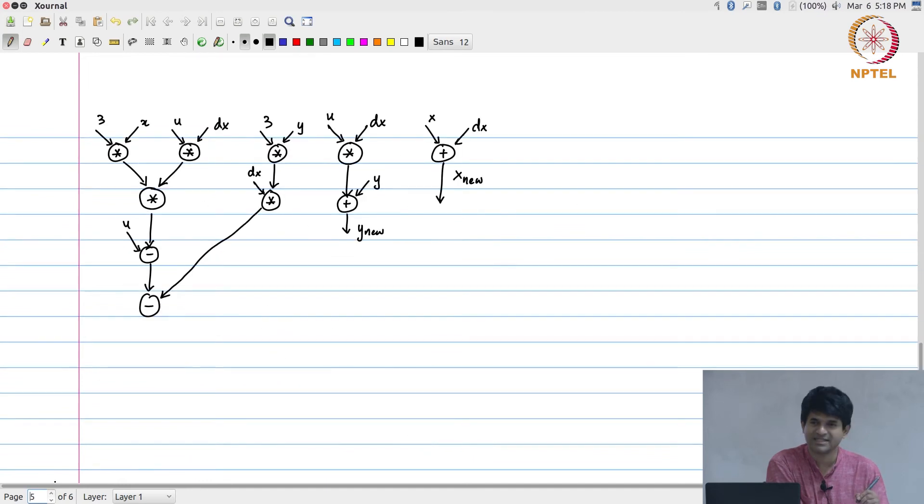If you look carefully at the task graph you would realize that this is probably nowhere near optimal. For example, this term u dx gets computed twice - there are two different places where the same u into dx is being done. I could also probably have done some 3 into dx at one shot and therefore used it to avoid doing the computation twice.